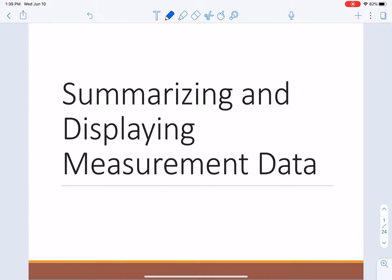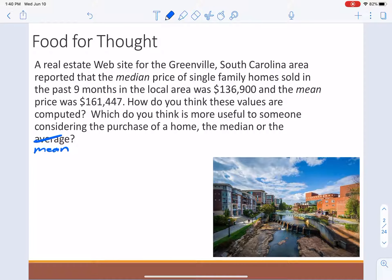Anyway, let's get into it. Let's talk about math. So today, we're going to be summarizing and displaying data. A real estate website in Greenville, South Carolina, a beautiful place, reported that the median price of homes sold in the past nine months was $136,900 and the mean price was $161,000. How do you think these values were computed? Which do you think is more useful for someone who is considering buying a home, the median or the mean? Pause the video and think about it for a second.